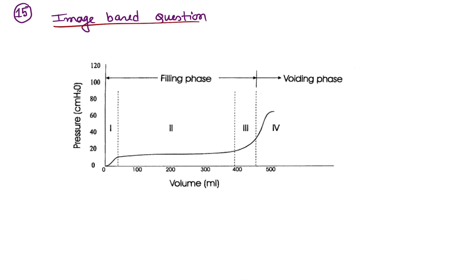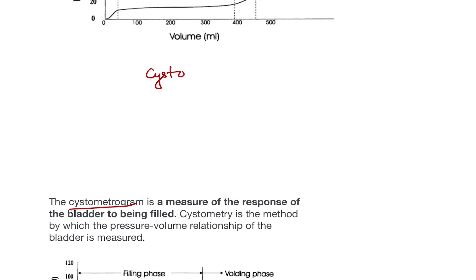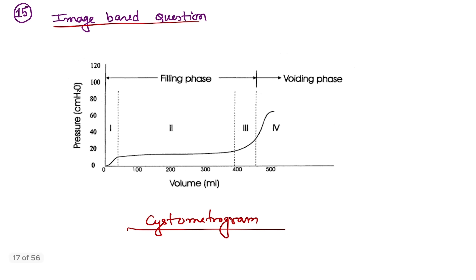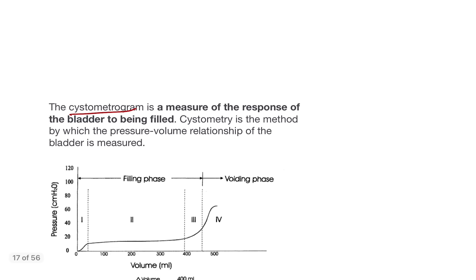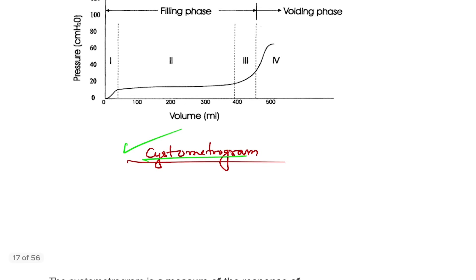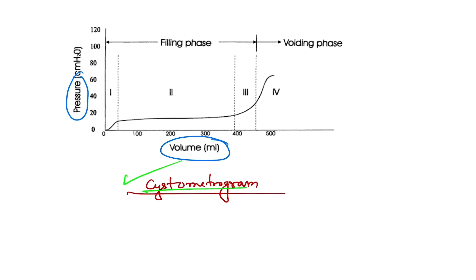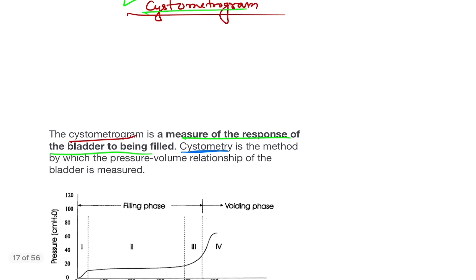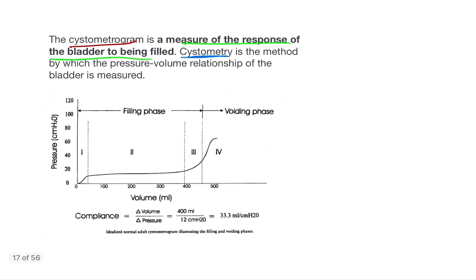This image is a typical cystometrogram — a graphical presentation of the cystometrogram. The cystometrogram measures the response of the bladder to being filled, showing the relationship between pressure and volume. This procedure is called cystometry and this graph is the cystometrogram. The compliance of the bladder is calculated from this graph.